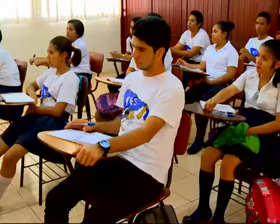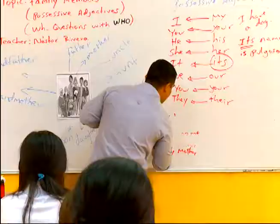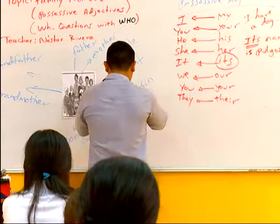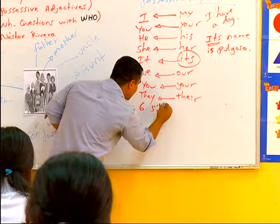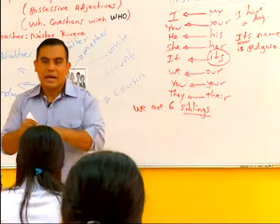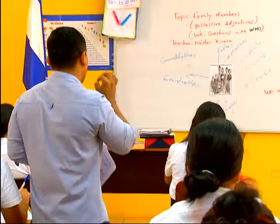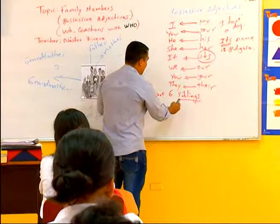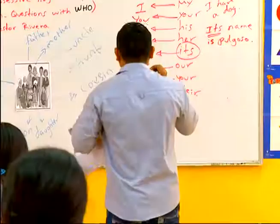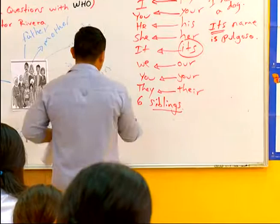Yes. Excellent. We are in my family — we are six siblings. En mi familia somos seis hermanos. Anotemos esa palabra: siblings significa hermanos, donde incluimos varones y mujeres. Si hablo solo de varones: brothers. Si hablo solo de mujeres: sisters. We are six siblings.